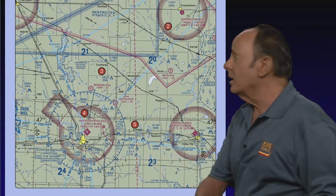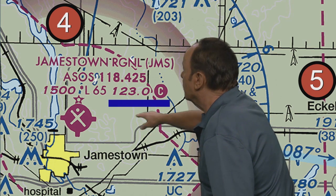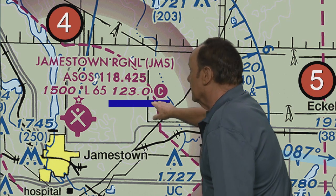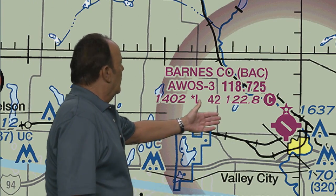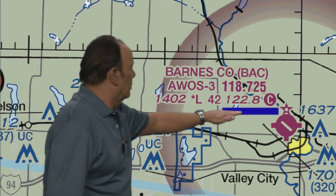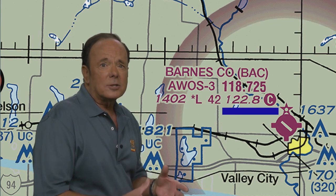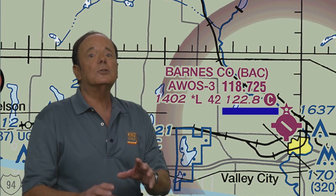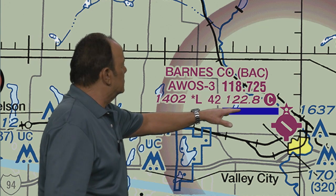Let's do another one. Let's saunter over to Jamestown, North Dakota. The question is: what is the common traffic advisory frequency? This C here tells you that 123.0 is the common traffic advisory frequency. And on the same chart, let's mosey over to Barnes County — the common traffic advisory frequency there is 122.8. This circle with the C tells you that is the CTAF. This frequency is also what is known as the unicom frequency, so the person who sells gasoline might answer you and might even give you advisories. But if he doesn't answer you, you just transmit in the blind — meaning no one in particular is there to answer, and you're talking to anybody in the area who's listening on 122.8.